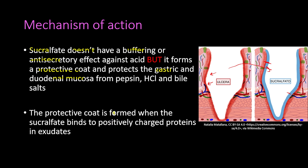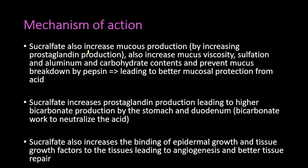This protective coat is formed when Sucralfate binds to positively charged proteins in exudates. Sucralfate also works by increasing mucus production through increasing prostaglandin production. Since prostaglandins increase mucus production, this leads to more mucus in the stomach. It also increases mucus viscosity, sulfation, and the aluminum and carbohydrate content of the mucus, and it prevents mucus breakdown by pepsin — all leading to better mucosal protection from the acid.